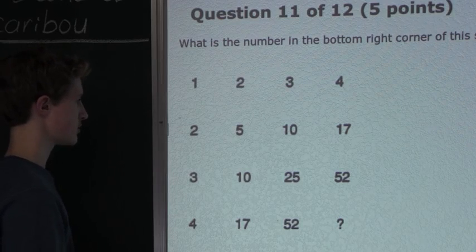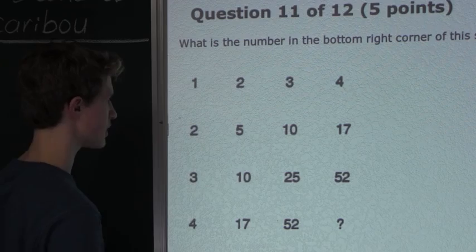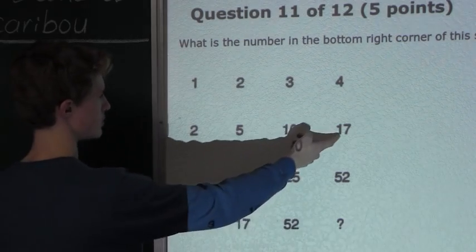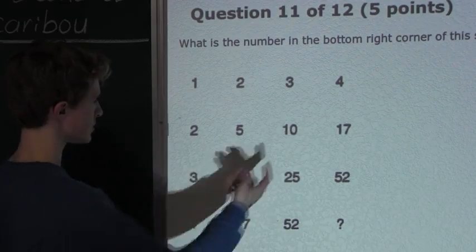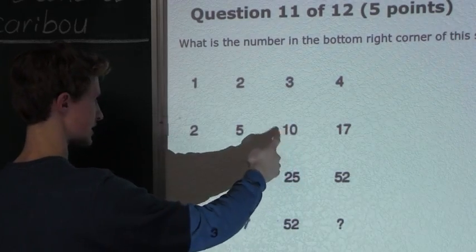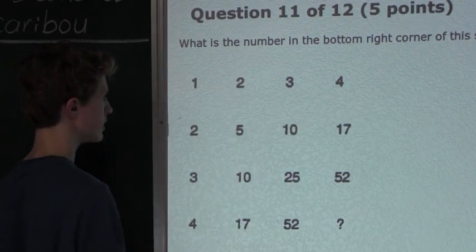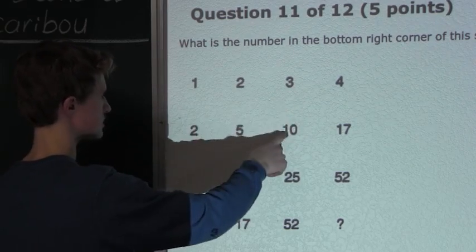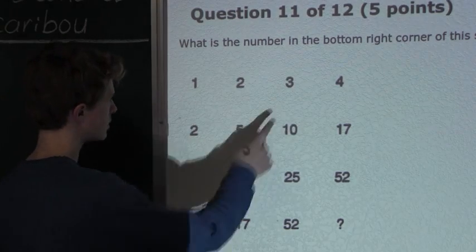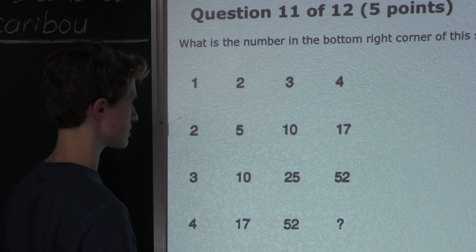So, just to show that it is consistent, and we can apply that rule to find this number, we will do this for 17. So, we will add up the left number, which is 10, the top number, which is 4, and the top left number, which is 3. So, 10 plus 4 is 14, plus 3 is 17. So, this works.